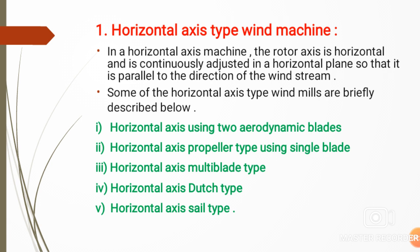The third type is the horizontal axis multi-blade type. In this type, the rotor is a multi-blade type, meaning it consists of 12 or more blades. The number of blades is determined according to the requirement of power or electricity production, and the rotor is constructed accordingly.